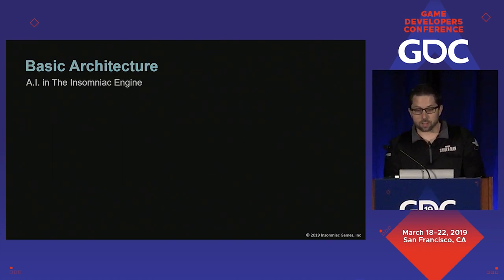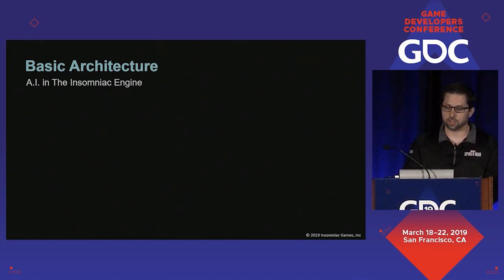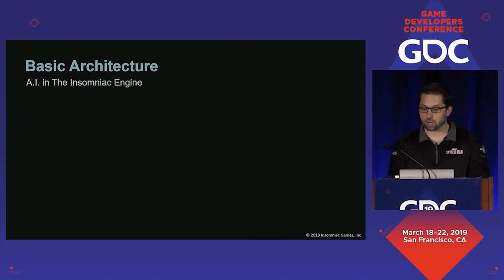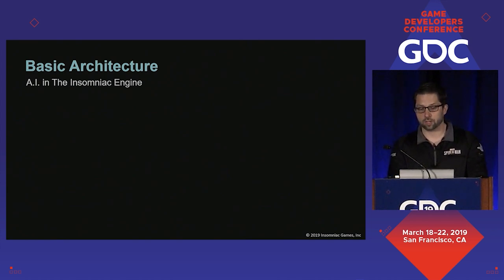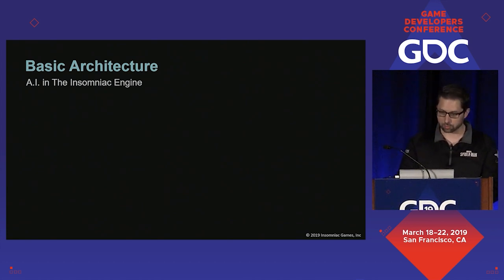Let me begin by briefly describing how we organize our AI behavior at Insomniac. We have our own proprietary engine and the vast majority of our code is written in C++. This is the general architecture that's been in use since about 2012. From here on I'm going to use the terms AI and bots interchangeably.